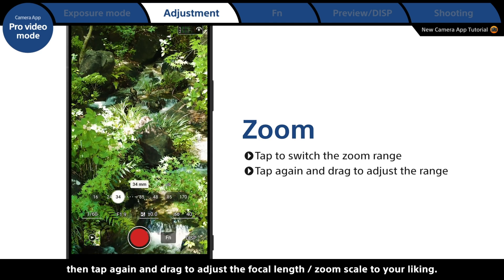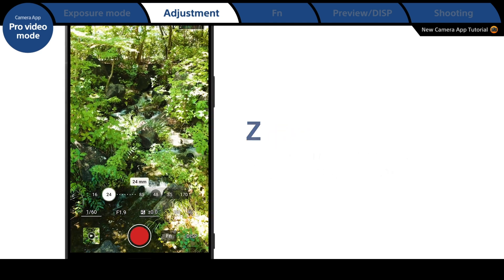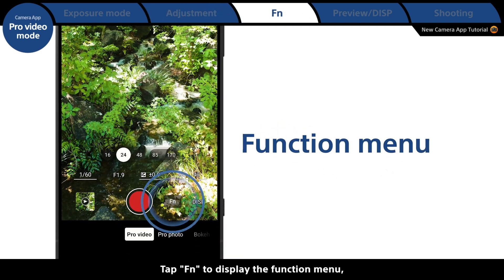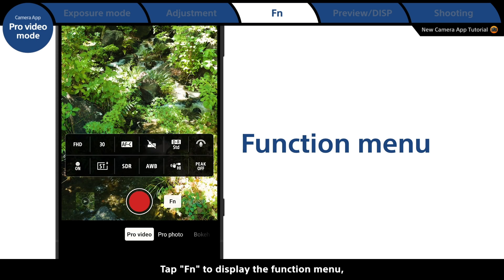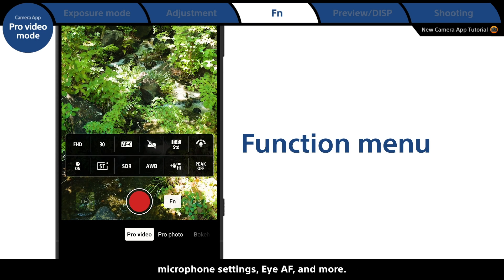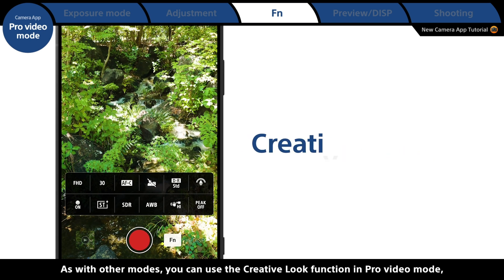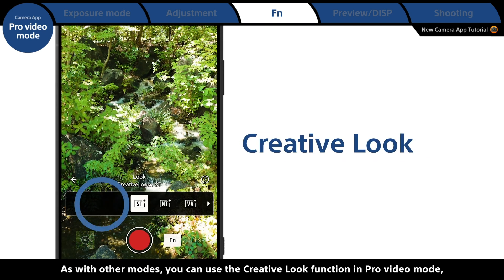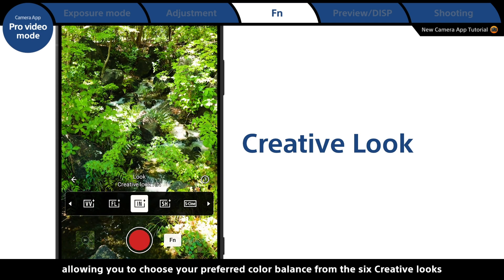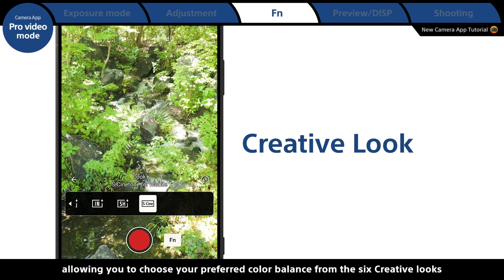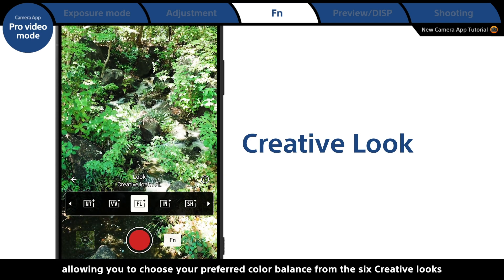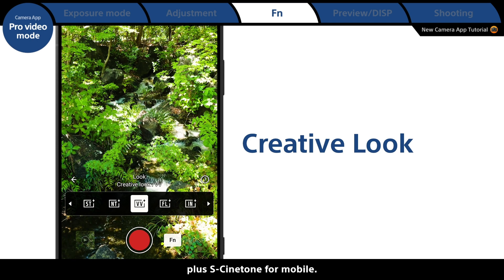Tap Function to display the function menu, from which you can fine-tune the frame rate, microphone settings, eye autofocus, and more. As with other modes, you can use the creative look function in pro video mode, allowing you to choose your preferred color balance from the six creative looks plus S-Cinetone for Mobile.